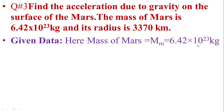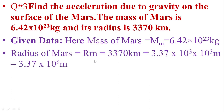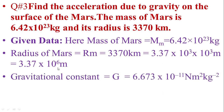The radius of Mars rm is equal to 3,370 km. Changing to scientific notation by moving the decimal place three positions gives 3.37 multiplied by 10 to the power 3, and since 1 km equals 10 to the power 3 meters, the final answer is 3.37 multiplied by 10 to the power 6 meters. Gravitational constant capital G is equal to 6.673 multiplied by 10 to the power minus 11 Newton meter square per kg square.